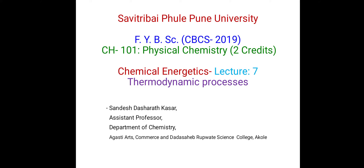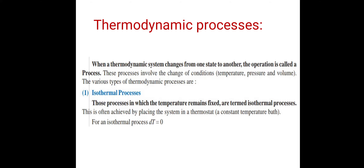Welcome to lecture 7 of chemical energetics. Today we are going to study thermodynamic processes. When a thermodynamic system changes from one state to another, the operation is called a process. These processes involve the change of conditions like temperature, pressure, and volume.